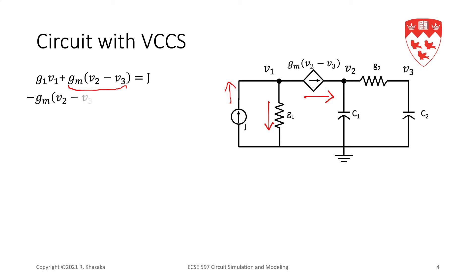Then, we write KCL at node 2. So, here we sum the currents leaving node 2 through all the elements. We have the controlled source, the current leaving through the controlled source. So, we have minus Gm V2 minus V3, or Gm V3 minus V2. We have the current leaving in the resistor G2, that's G2 V2 minus V3. And we have the current in the capacitor, which is C1 V2 dot.